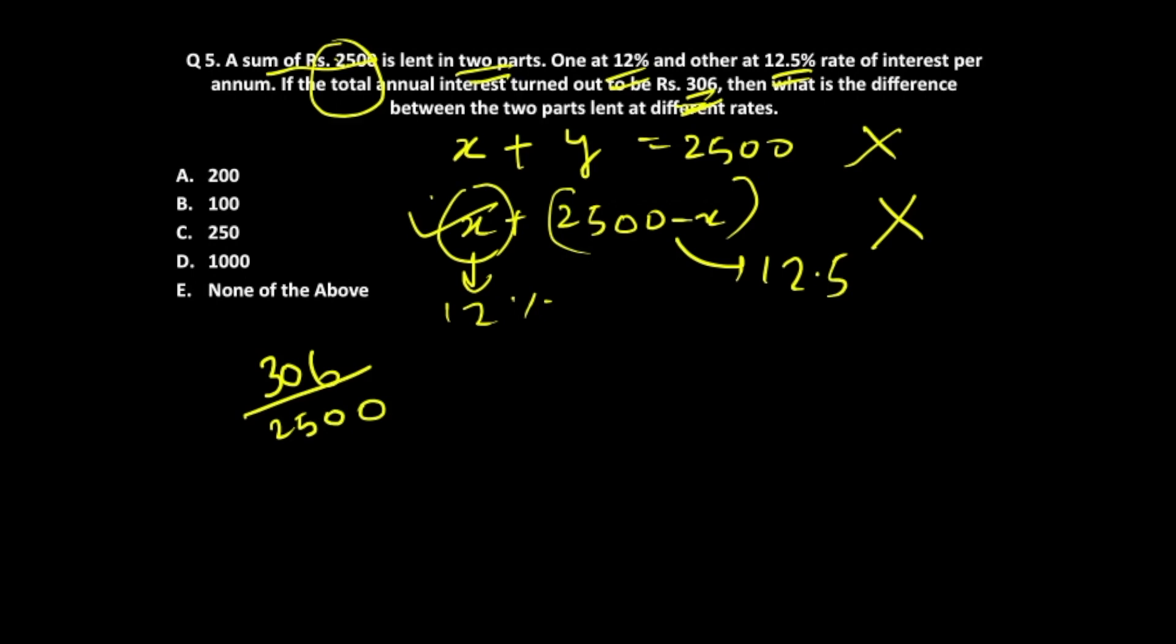To convert it, you multiply by 4, which gives 1224 divided by 10,000, which equals 12.24%. So the average rate of interest for the entire sum is 12.24%.